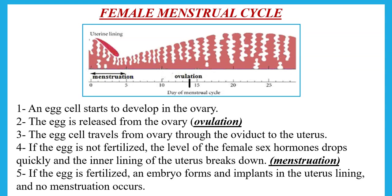The first thing that happens is an egg is released from the ovary on day 14 of the menstrual cycle — this is called ovulation. The egg then travels from the ovary through the oviduct toward the uterus.